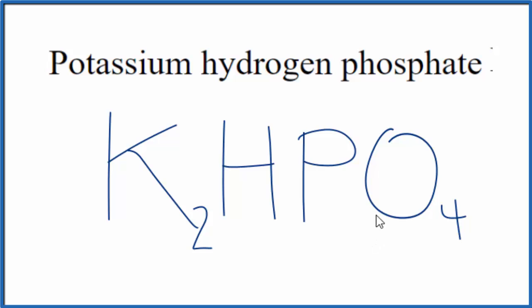This is the formula for potassium hydrogen phosphate, K2HPO4.